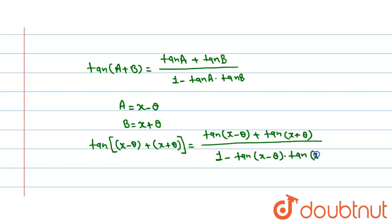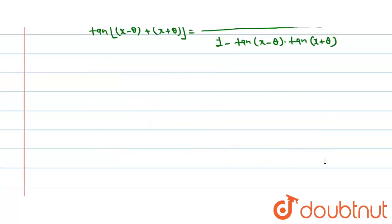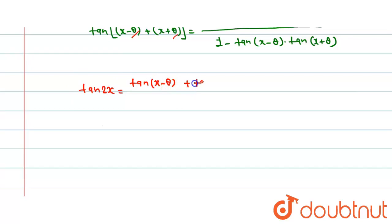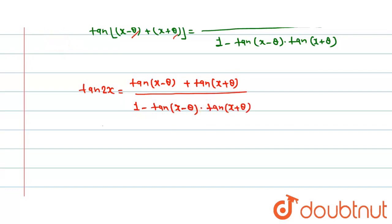Now in the next step, θ and −θ cancel out, so we get tan(2x) is equal to tan(x − θ) + tan(x + θ) upon 1 minus tan(x − θ) into tan(x + θ).